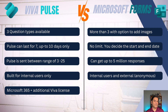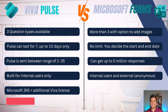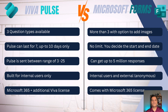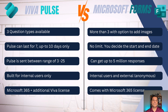Last but definitely not least: Viva Pulse is not included in your existing Microsoft 365 license. You do need an M365 license, but in addition you'll need a Viva license — purchasable individually or as part of the full Viva suite. Microsoft Forms, on the other hand, comes included with your M365 license across different tiers including Enterprise E3, E5, and most Business plans.